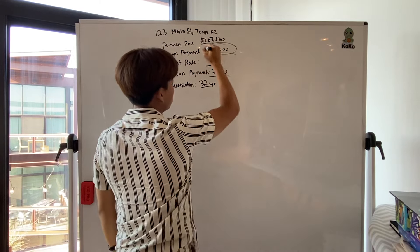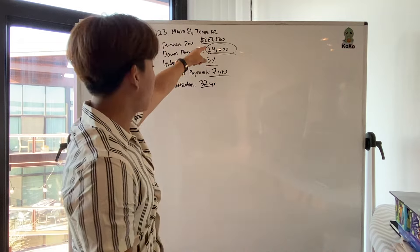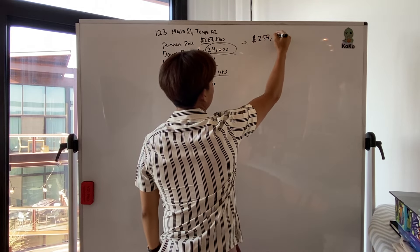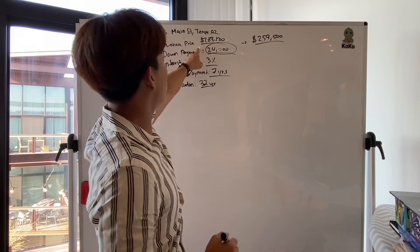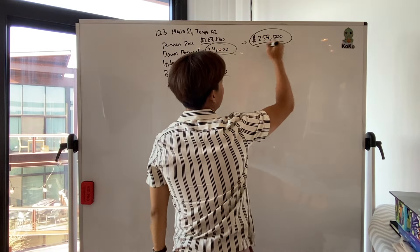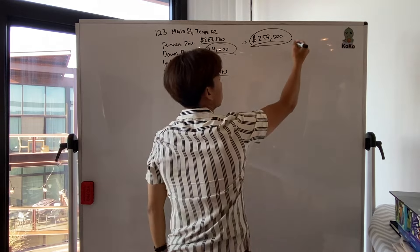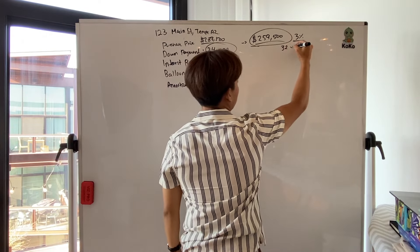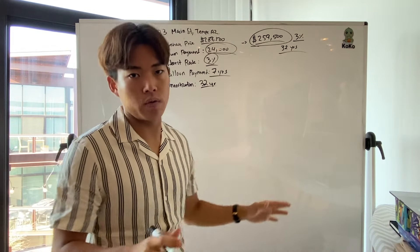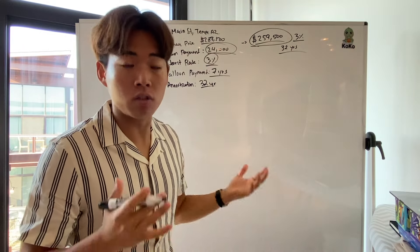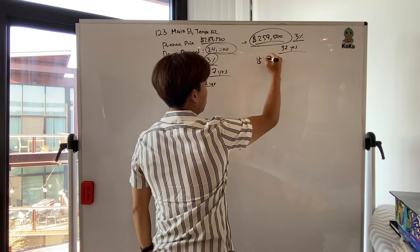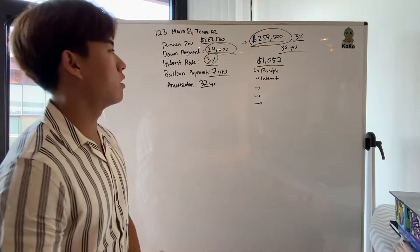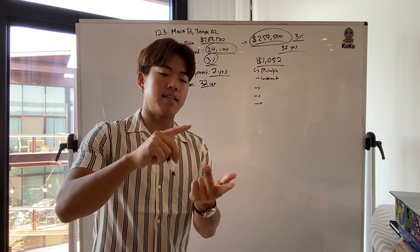So $24,000 is the down payment that goes towards the purchase price. So I'll be taking a loan from the homeowner for $259,500. And how did I come up with a loan amount? You just minus the purchase price, minus the down payment. So I'm taking a loan at $259,500, and I'll be at a 3% interest rate. And I'm scheduling the payment for 32 years. And when you put this into the amortization calculator, your payment just on the mortgage comes out to be $1,052. And this is just the principal and interest.